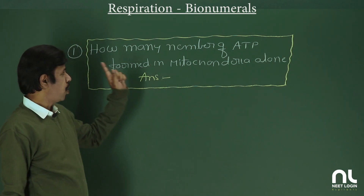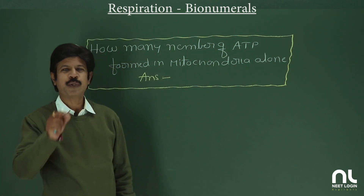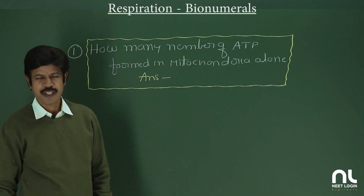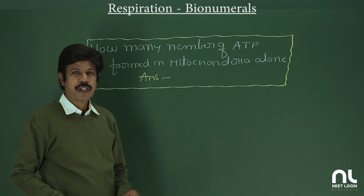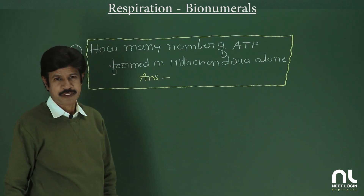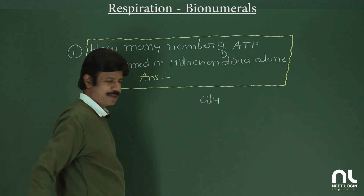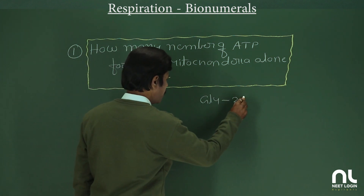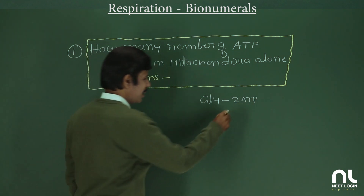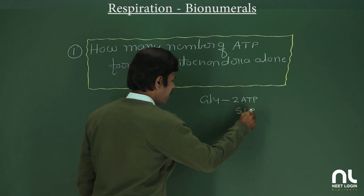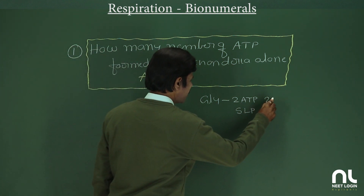With regard to the first question: how many ATP are formed in mitochondria alone during total aerobic respiration? In glycolysis, two ATP are formed via substrate level phosphorylation, and two NADH are produced.